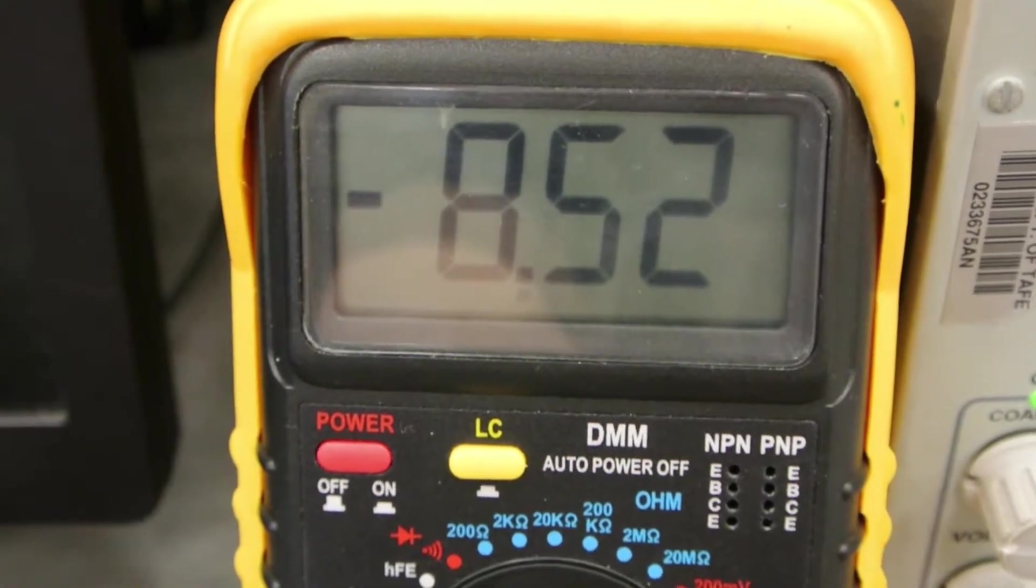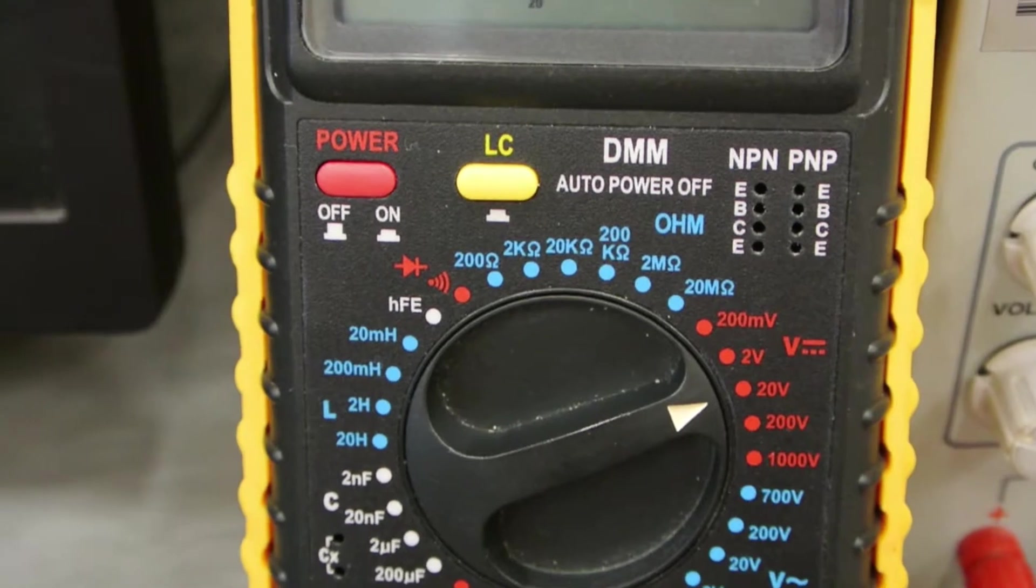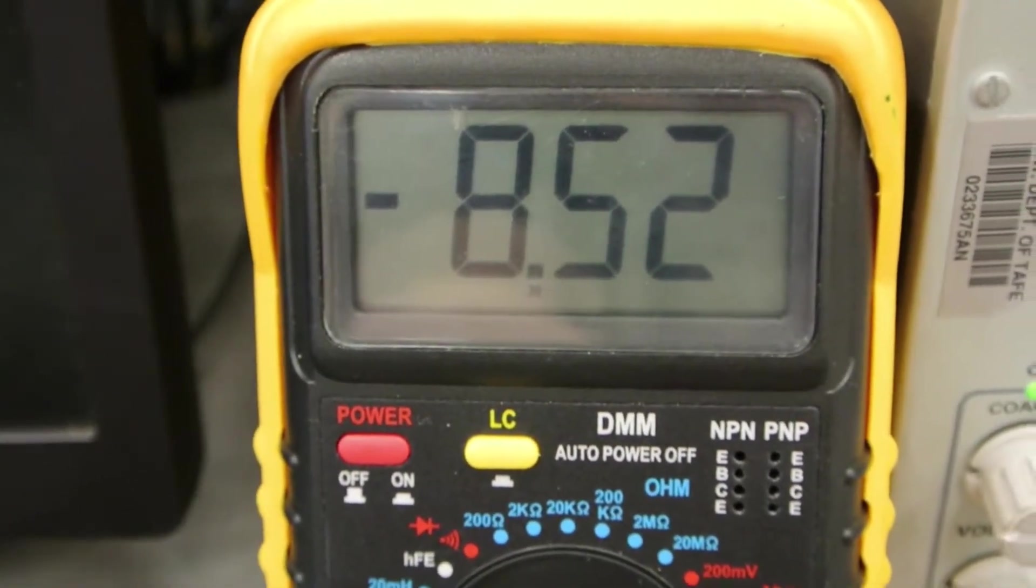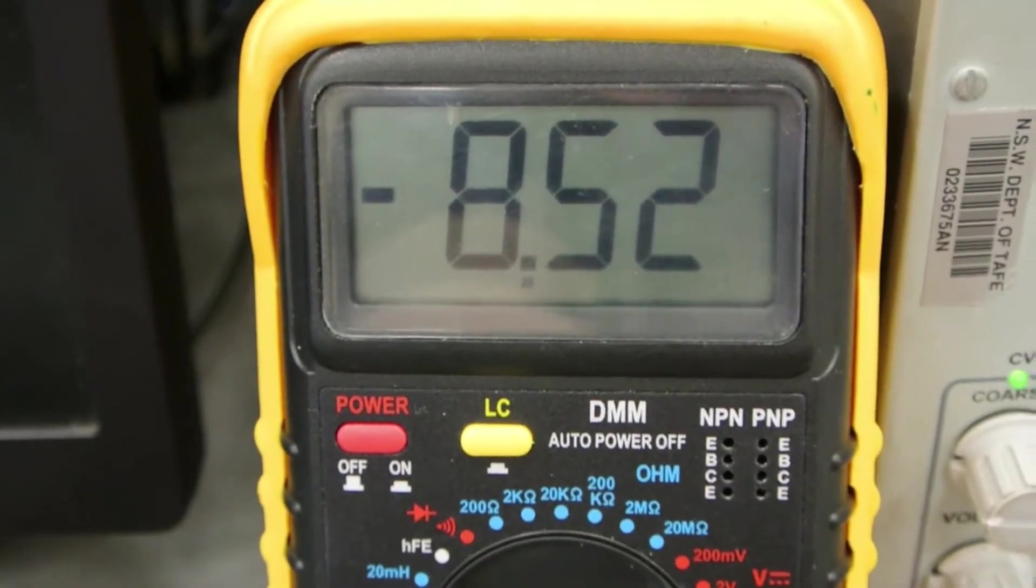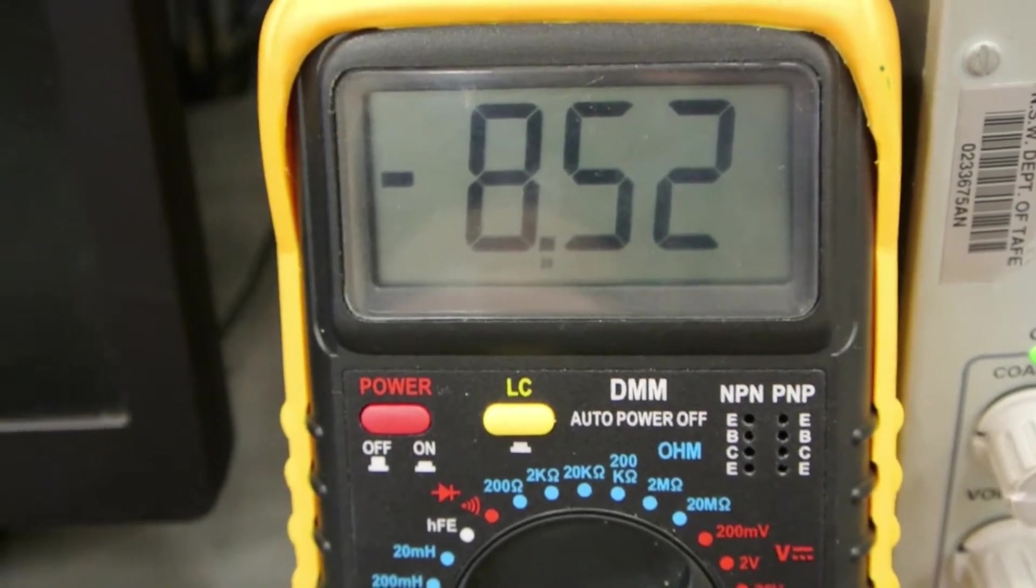By the way, I'm using the 20 volt DC range. Now, the deal with the negative symbol, a lot of students ask me about that. This is a digital multimeter, and it can read regardless of the polarity of the leads.